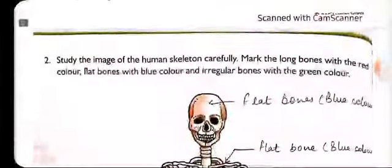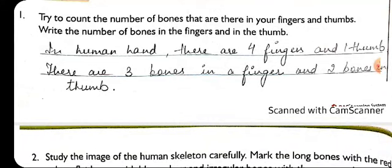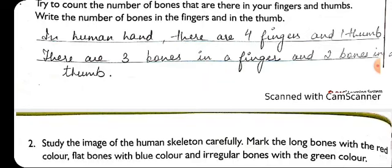The next practice zone activity is to count the number of bones in the fingers and thumbs. There are four fingers and one thumb. There are three bones in one finger and two bones in one thumb. So four fingers have 12 bones, and the thumb has 2 bones, making a total of 14 bones in the fingers and thumb. The remaining 12 bones from the 26 total are in the palm region.